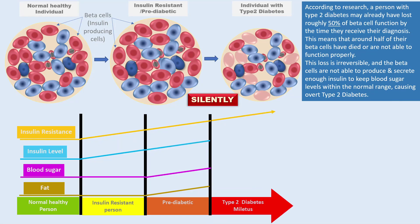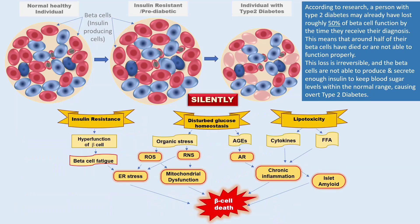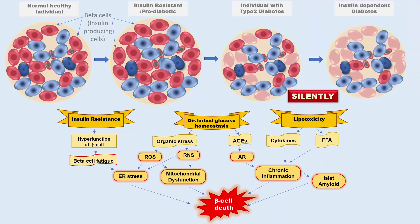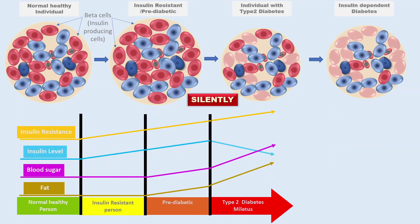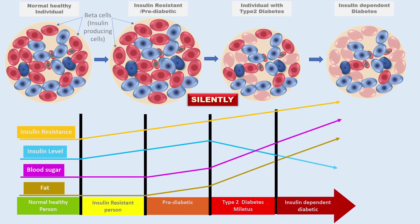At this stage, insulin resistance continues to rise; however, the insulin level begins to come down. Blood sugar and fat in the blood continue to rise. However, some people continue to take diabetes lightly and silently continue to lose beta cells. In the next few years, they lose a major chunk of beta cells and the stage comes when the leftover beta cells can hardly produce any insulin. At this stage, the person will need injectable insulin to keep blood sugar levels in the safe range. Insulin resistance, blood sugar, and triglycerides continue to rise, while the insulin level becomes very low.